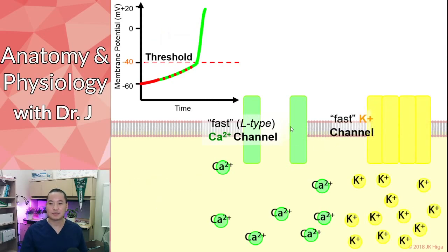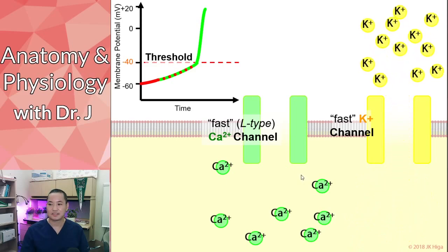So once the membrane potential inside a pacemaker cell gets to that very positive membrane potential, that opens another type of channel. So it's going to open up a potassium channel. And remember, in a cell at rest, you have more potassium on the inside than on the outside. So if you open these potassium channels, what's going to happen? Potassium leaves the cell.